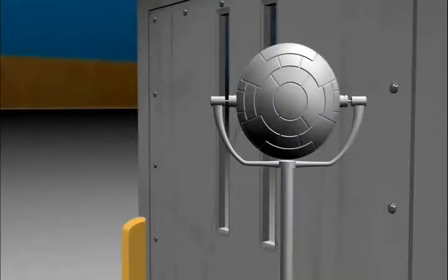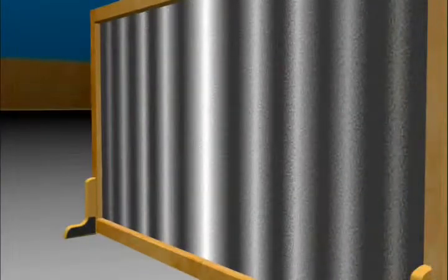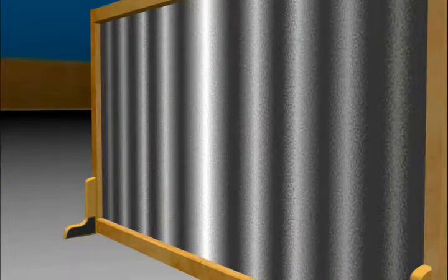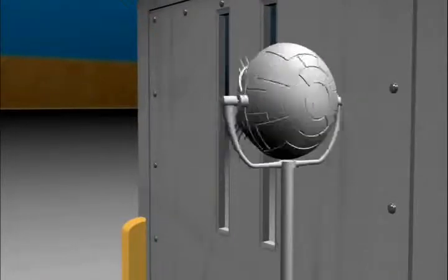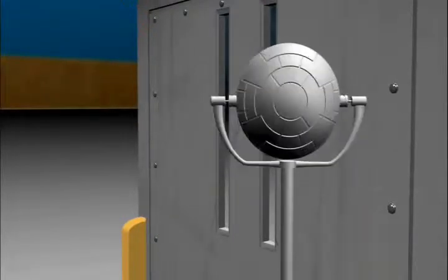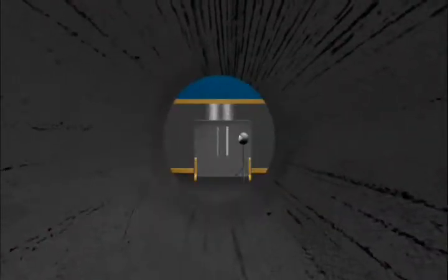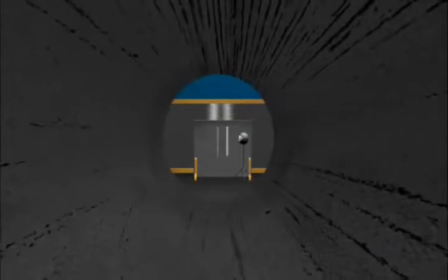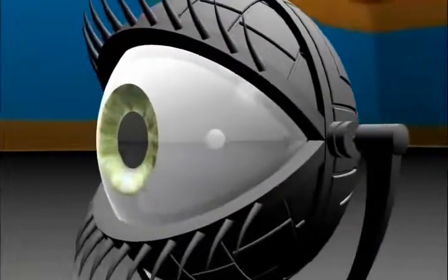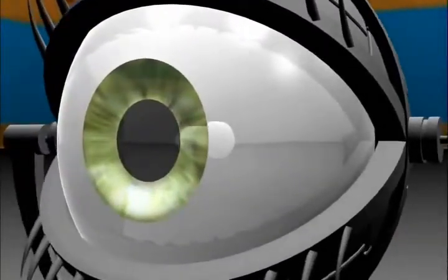the electron went back to behaving like a little marble. It produced a pattern of two bands, not an interference pattern of many. The very act of measuring, or observing, which slit it went through meant it only went through one, not both. The electron decided to act differently, as though it was aware it was being watched.